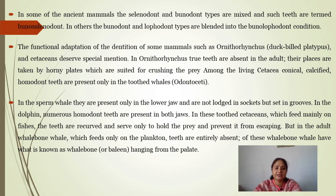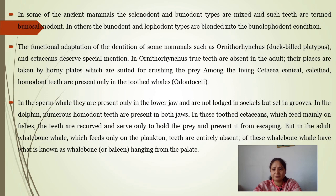Functional adaptation of the dentition of some mammals such as Ornithorhynchus (duck-billed platypus) and Echidna deserves special mention. In Ornithorhynchus, true teeth are completely absent and their places are taken by horny plates suited for crushing prey. Among living cetaceans, conical calcified homodont teeth are present only in the toothed whales or Odontoceti. In Ornithorhynchus, teeth are present only in the lower jaw but are not locked in sockets — they are set in grooves.